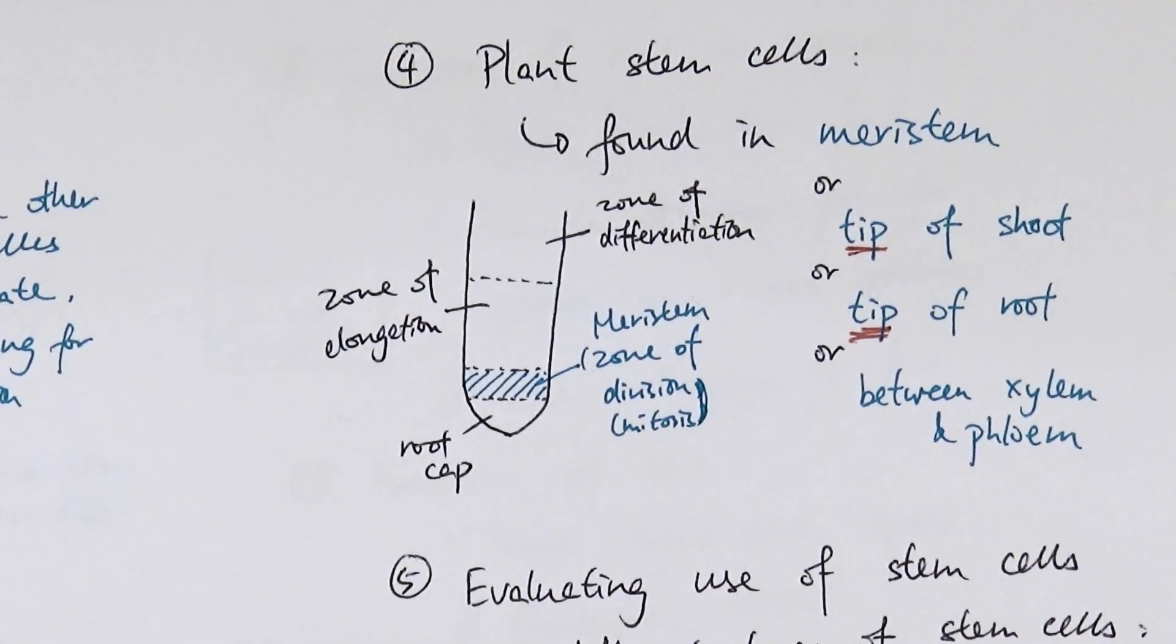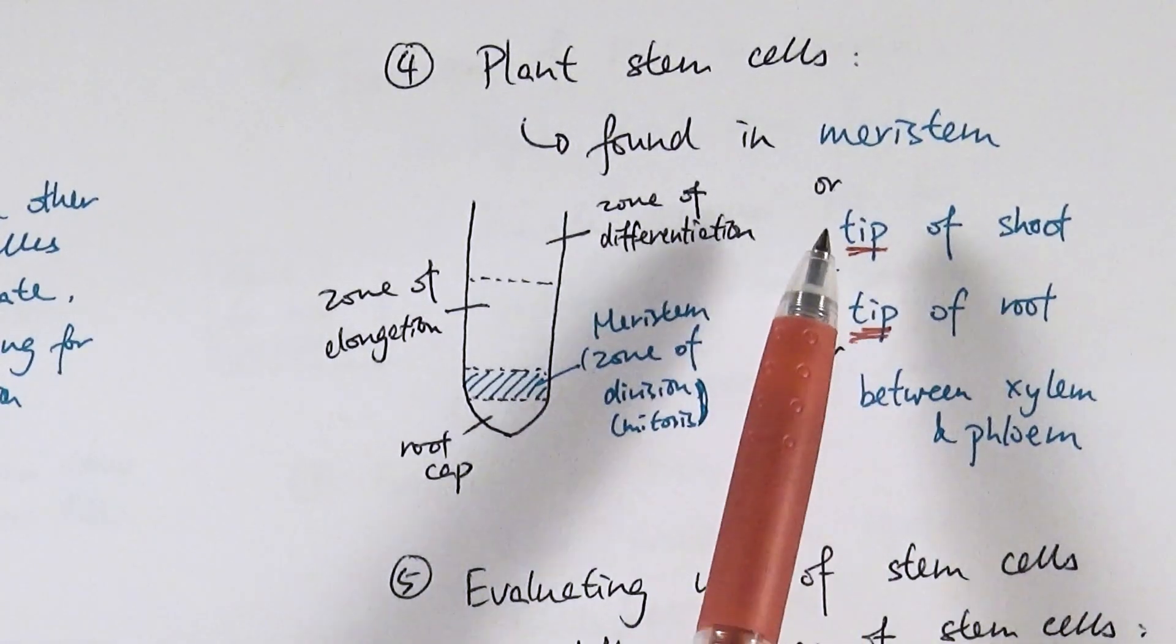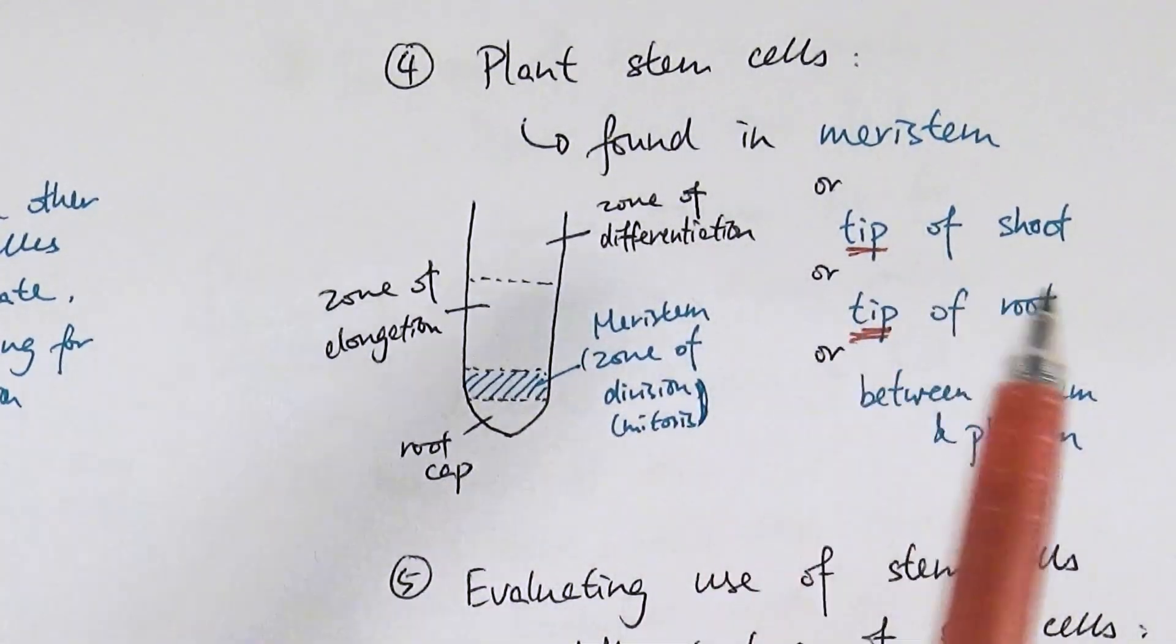Or you can say it's between xylem and phloem, but most people sort of remember that it's in the meristem or the tip of the shoot or the root.